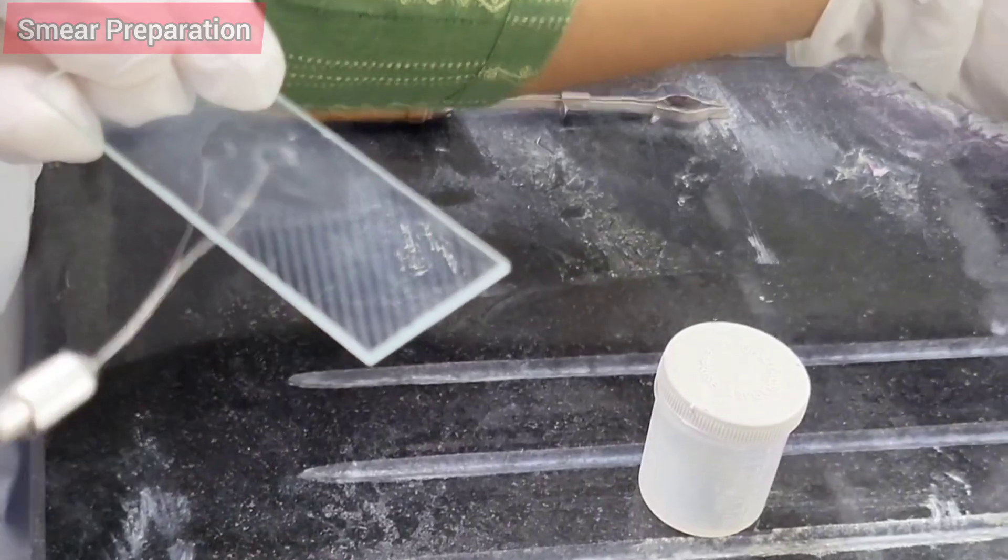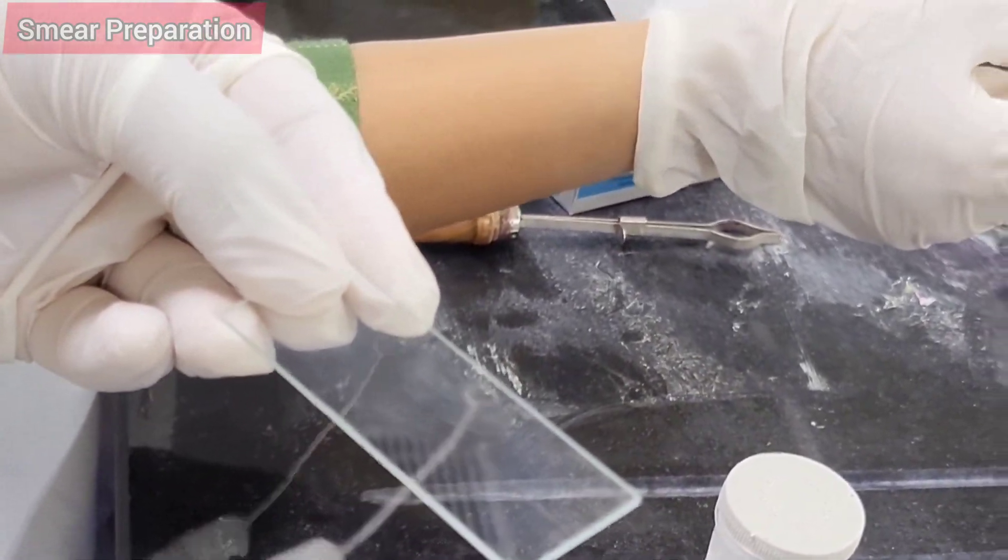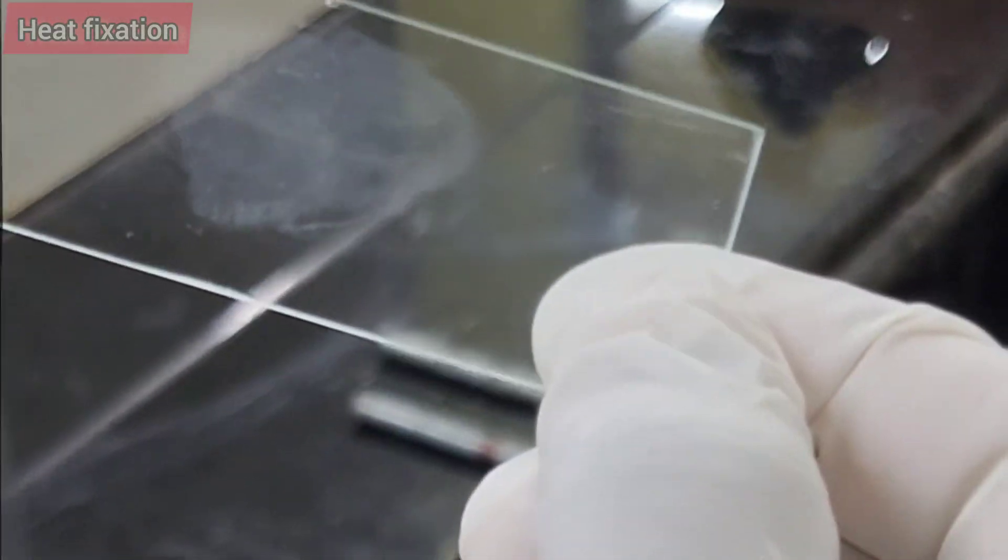Other specimens can be used: pleural fluid, CSF, and tissue biopsies. Next step is heat fixation. After air drying, the slide should be passed over the flame four to five times.